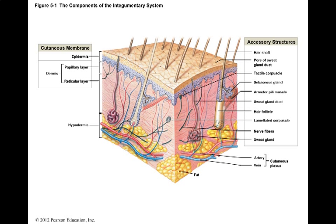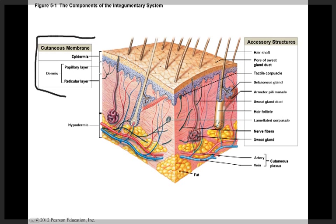There are two major components of the Integumentary System. The first is the cutaneous membrane. The cutaneous membrane consists of both the epidermis, which is a more superficial layer of the skin and is an epithelium, and also the dermis, which is the underlying connective tissue layer underneath the epidermis.